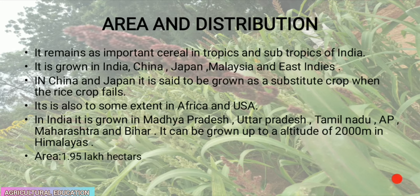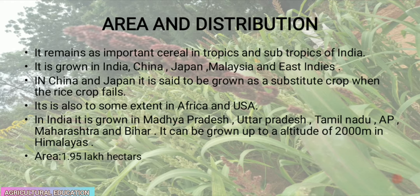Barnyard millet remains an important cereal in the tropics and subtropics of India. It is grown in India, China, Japan, Malaysia, and the East Indies. In China and Japan it is grown as a substitute crop when the rice crop fails. It is also grown to some extent in Africa and the U.S. In India it is grown in Madhya Pradesh, Uttar Pradesh, Tamil Nadu, Andhra Pradesh, Maharashtra, and Bihar. It can be grown up to an altitude of 2000 meters in the Himalayas. The area under cultivation is 1.95 lakh hectares.